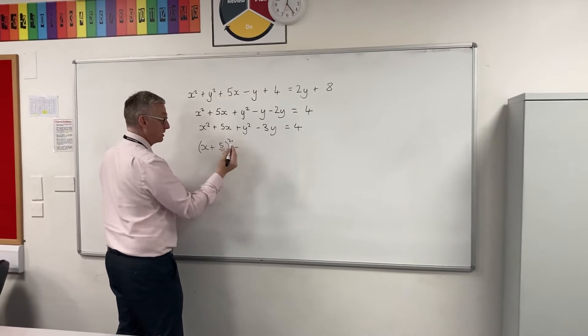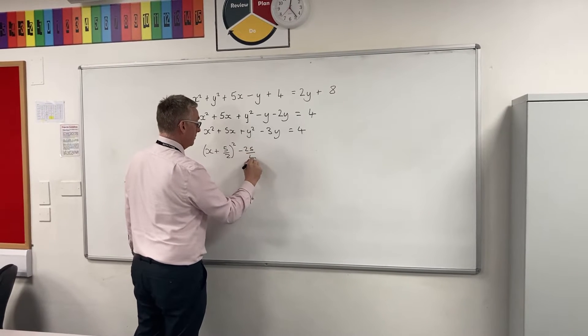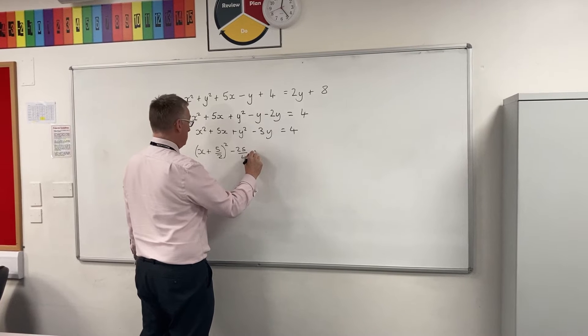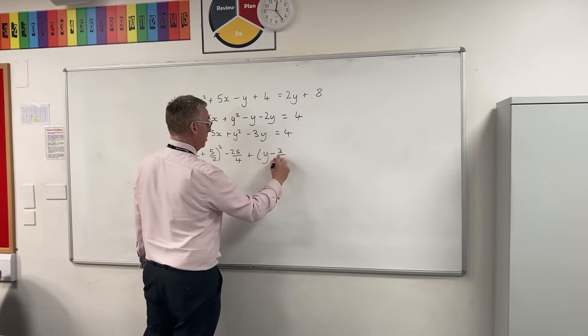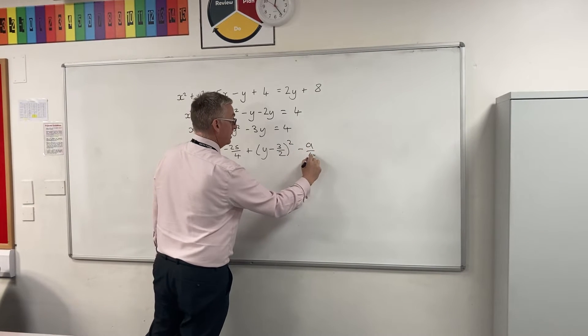Square that, take it away, standard completing the square, 25 over 4, plus y minus 3 over 2 all squared, square that, take it away, which is 9 over 4.